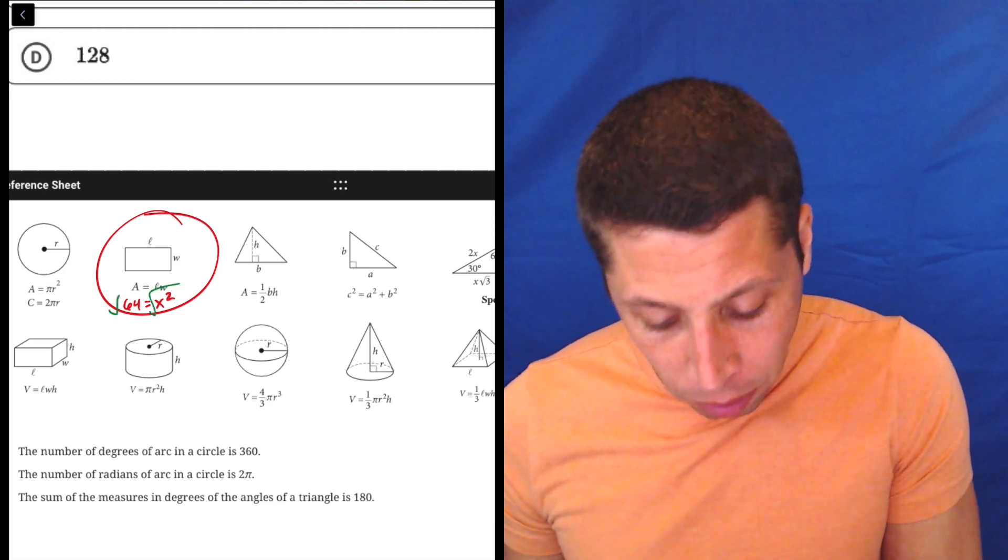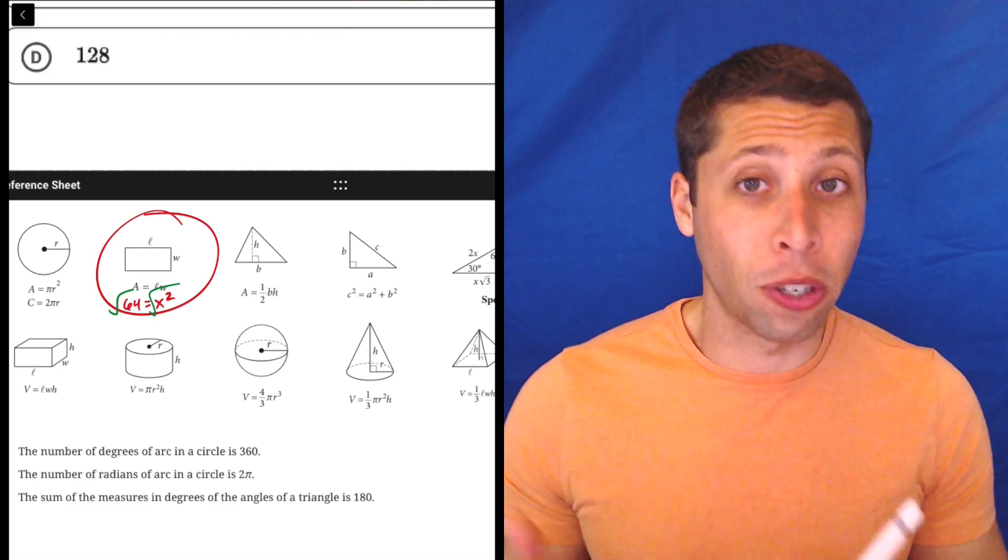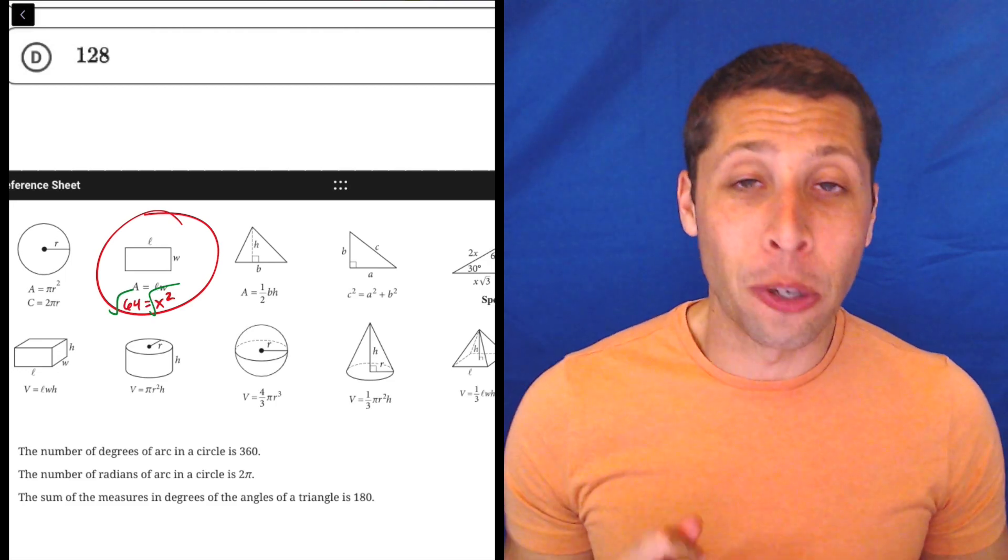And then how do we solve that with algebra? Well, we could just take the square root of both sides, and hopefully by now you do know that 64 is a perfect square. So the square root of 64, you should be able to do instantly—it is 8.